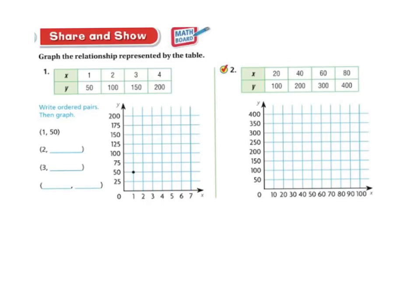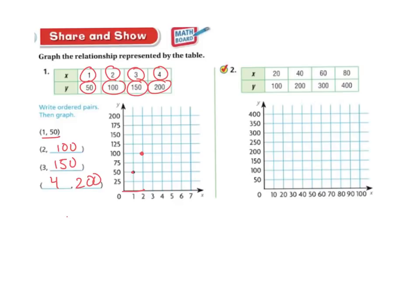Let's do a couple more examples. First we need to fill out the ordered pairs. We have 1 and 50, the next one is 2 and 100, the next one is 3 and 150, and the next one is 4 and 200. Now I'm going to graph them: over 1 and up 50, over 2 and up to 100, over 3 and up to 150, and over 4 and up to 200.